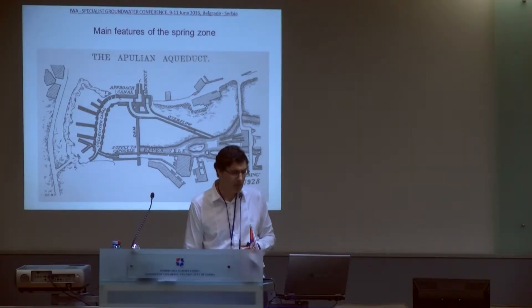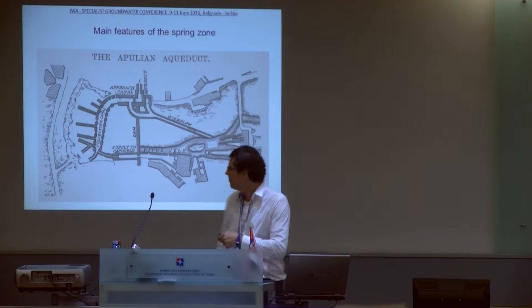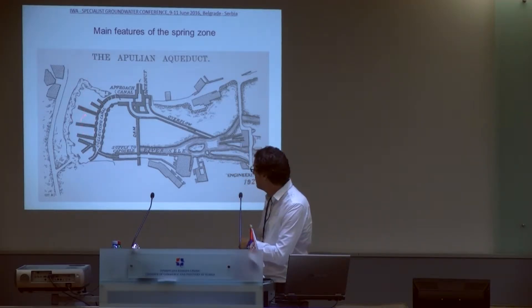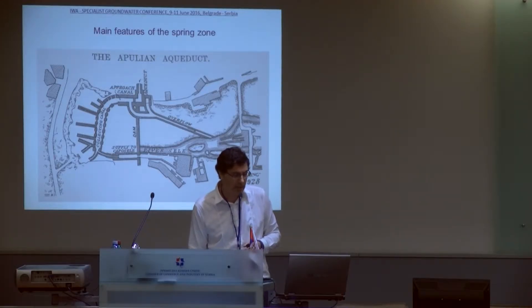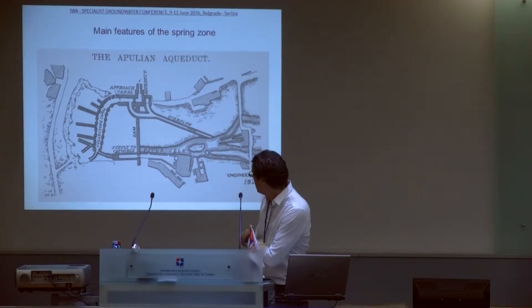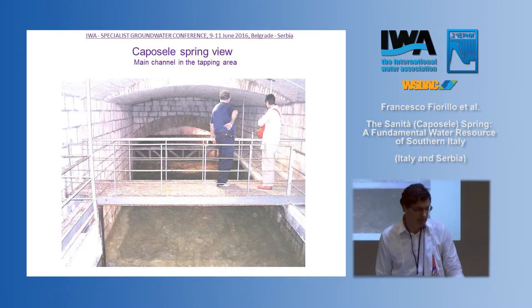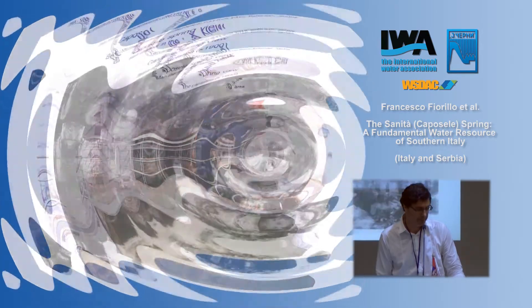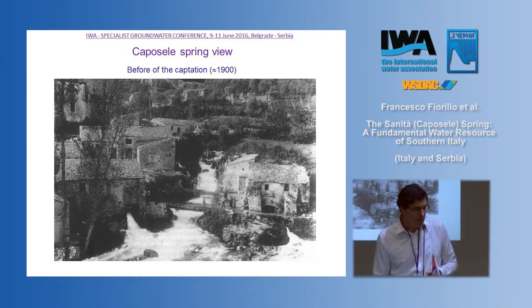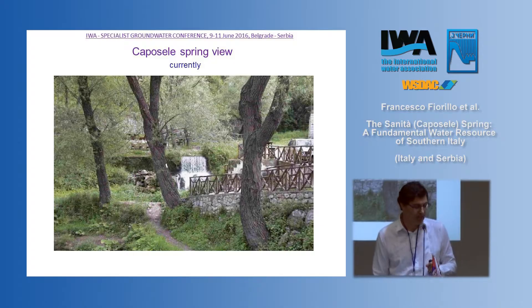This is an old sketch of the tapping zone. We see here several drains into the karst rock collected into the mine channel. A dam was also built to reduce drainage. This is a photo inside the mine channel where a first measurement of the discharge is carried out. This is an old view of the Caposele village, where we can see the high flow of springs before the captation; now only a little part is left for the Sele River.